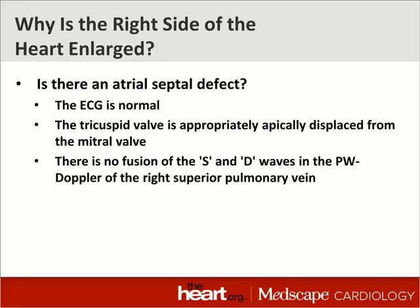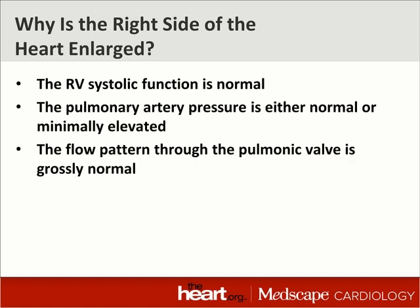So why is the right side of the heart enlarged? The first thing one always thinks about in an asymptomatic person is an atrial septal defect that never got picked up. But the electrocardiogram was normal — typically with an ASD, there's an incomplete right bundle branch block with a left or right axis deviation, depending on whether it's a primum or secundum ASD. There are sinus venosus ASDs that a transthoracic echocardiogram would not see. The lack of fusion of the S and D waves in the pulmonary vein Doppler argues against a primum or secundum ASD. The tricuspid valve appears where it's supposed to be, and we don't see any flow across the atrial septum. The RV systolic function is normal even though the RV is dilated, pulmonary valve flow pattern is normal, and PA pressure is virtually normal.